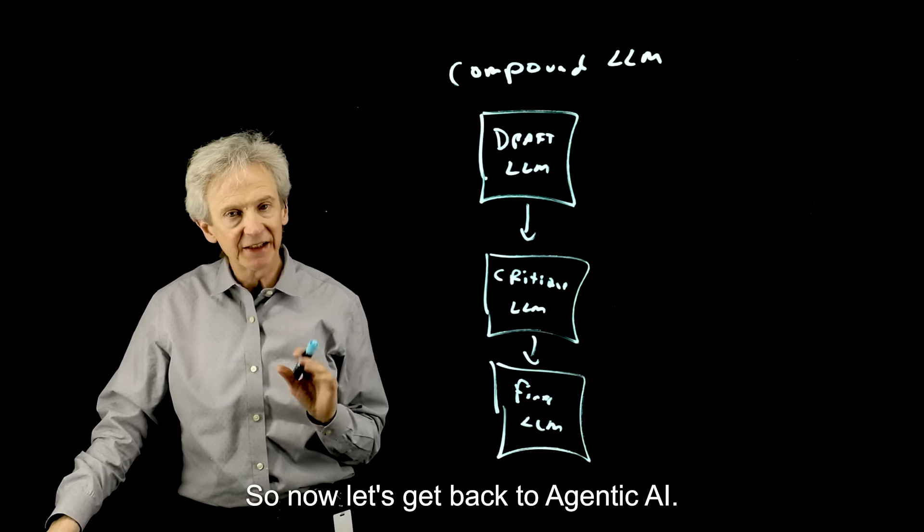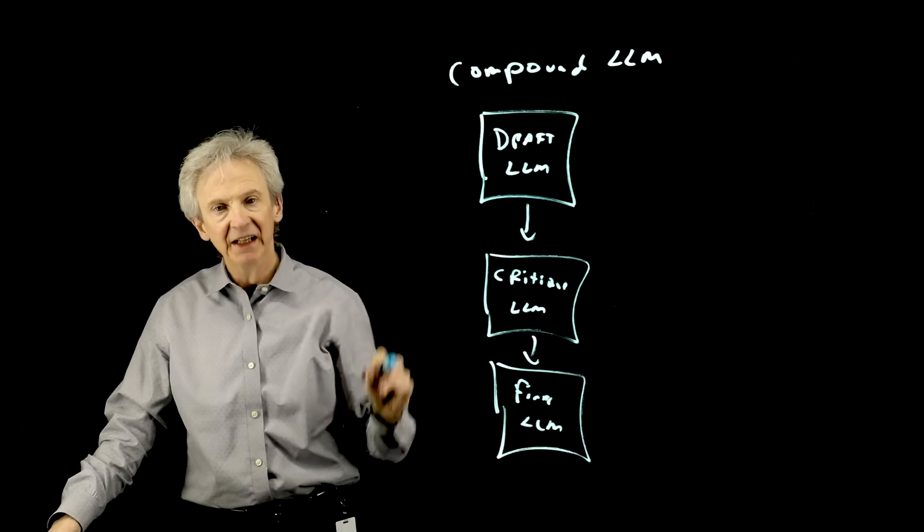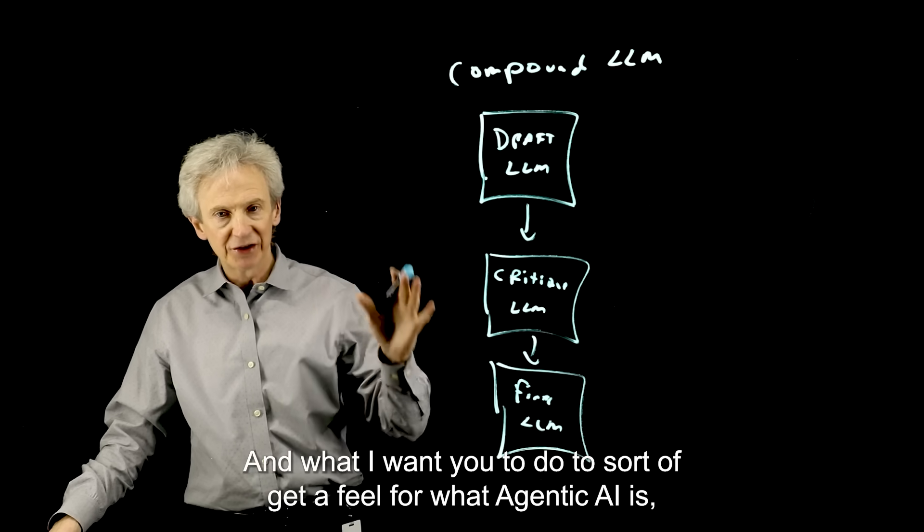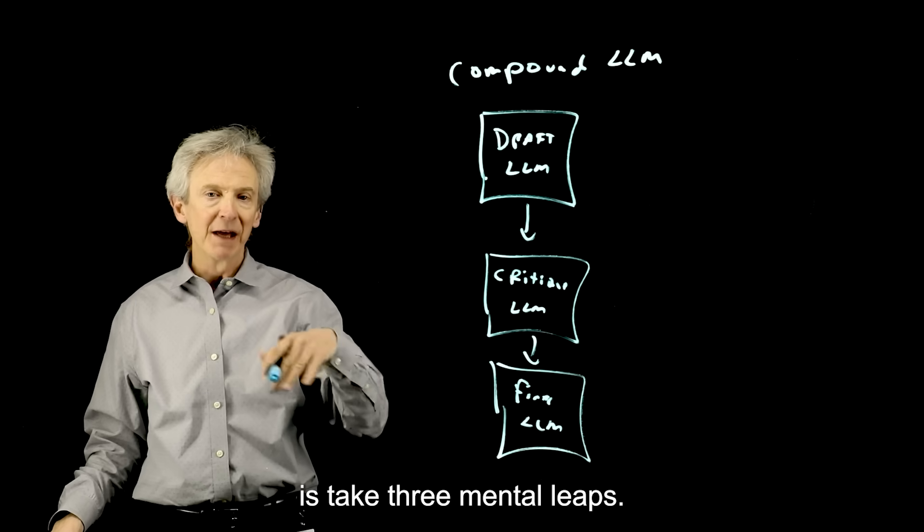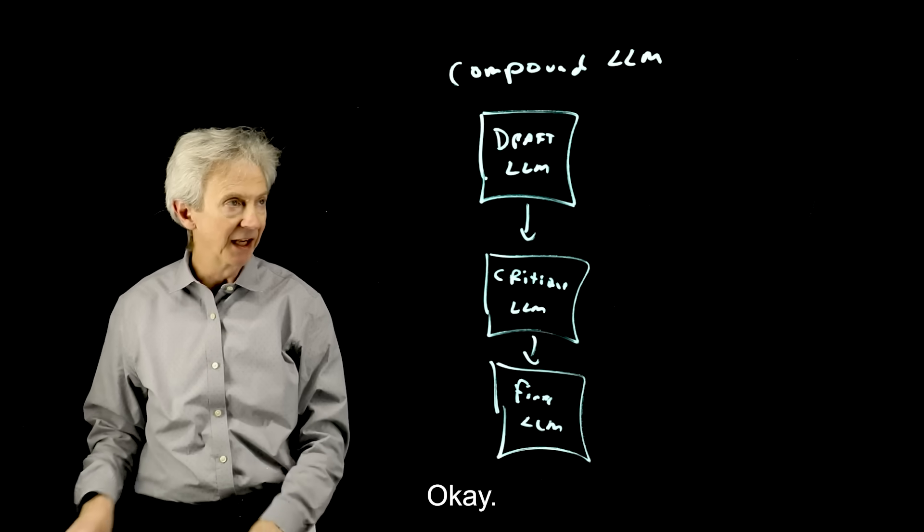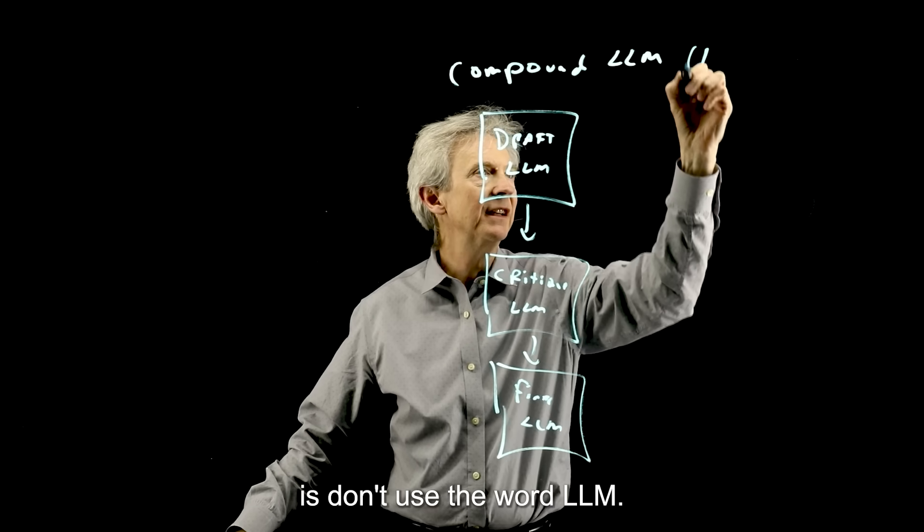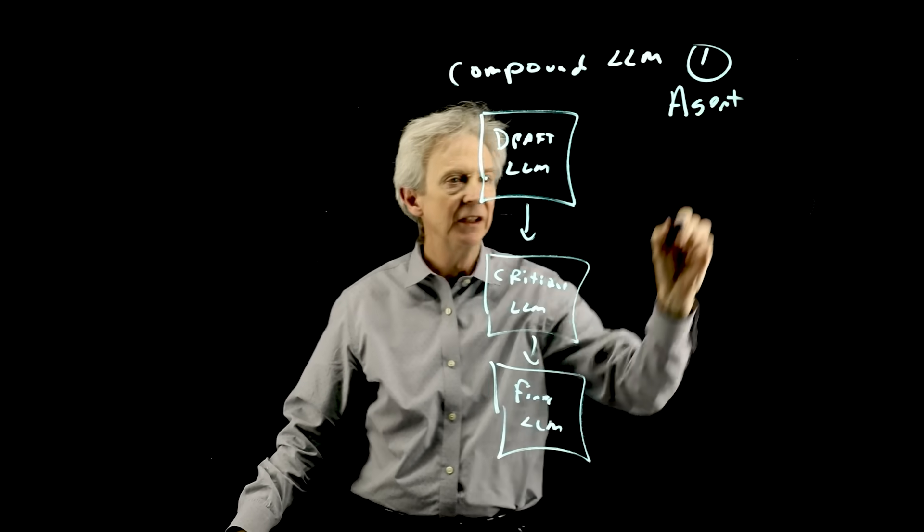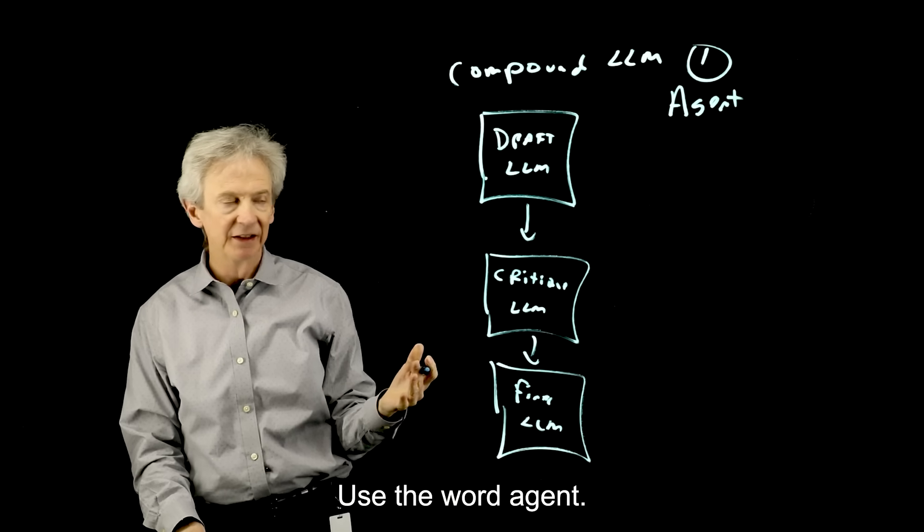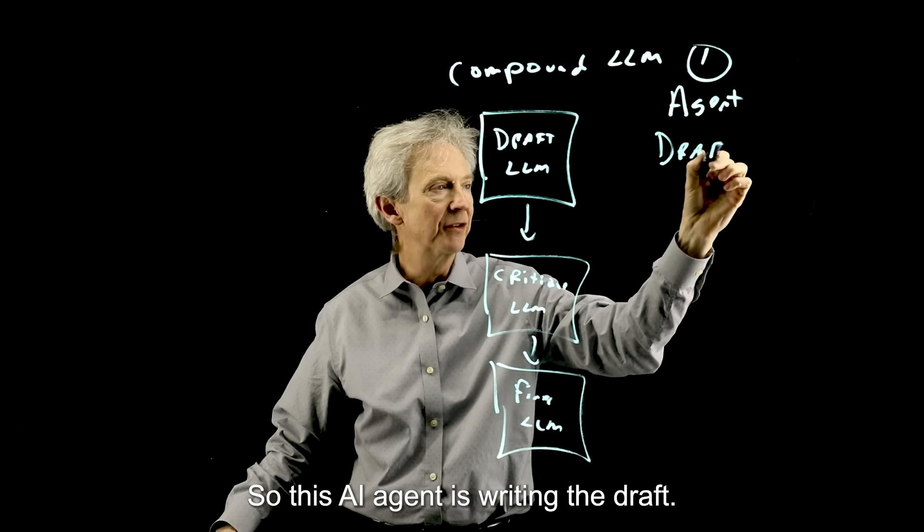So now let's get back to agentic AI. This is an example of agentic AI. And what I want you to do to sort of get a feel for what agentic AI is, is take three mental leaps. Okay, the first leap, right over here, is don't use the word LLM. Use the word agent. So this AI agent is writing the draft.